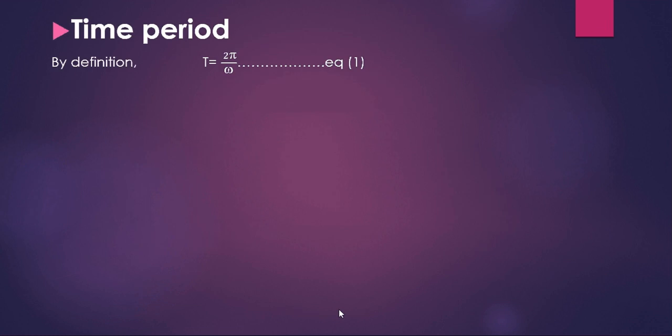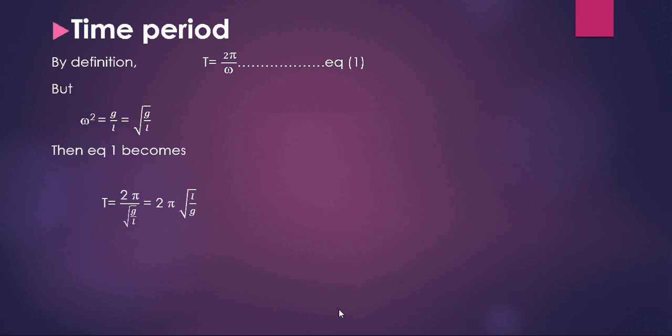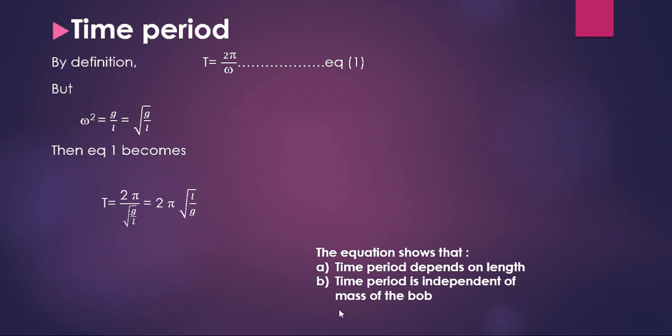Time period: T = 2π/ω (equation 1). Since ω² = g/L, then ω = √(g/L). Substituting into equation 1: T = 2π/√(g/L) = 2π√(L/g). This equation shows that the time period depends upon the length of the pendulum, while it is independent of the mass of the bob.